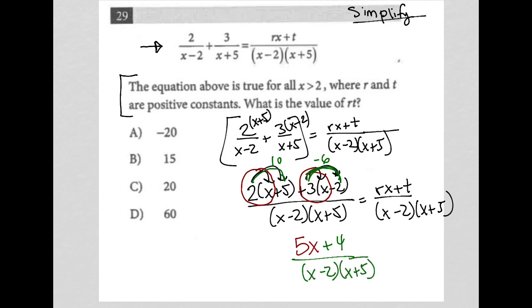So now when I compare these two fractions together, it's easy to see that my r value is 5 and my t value is 4.